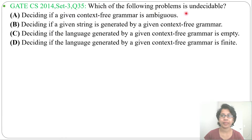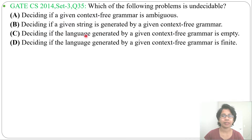Which of the following problems is undecidable? Option A: deciding if a context-free grammar is ambiguous. Option B: deciding if a given string is generated by a given context-free grammar. Option C: deciding if the language generated by a given context-free grammar is empty. Option D: deciding if the language generated by a given context-free grammar is finite.